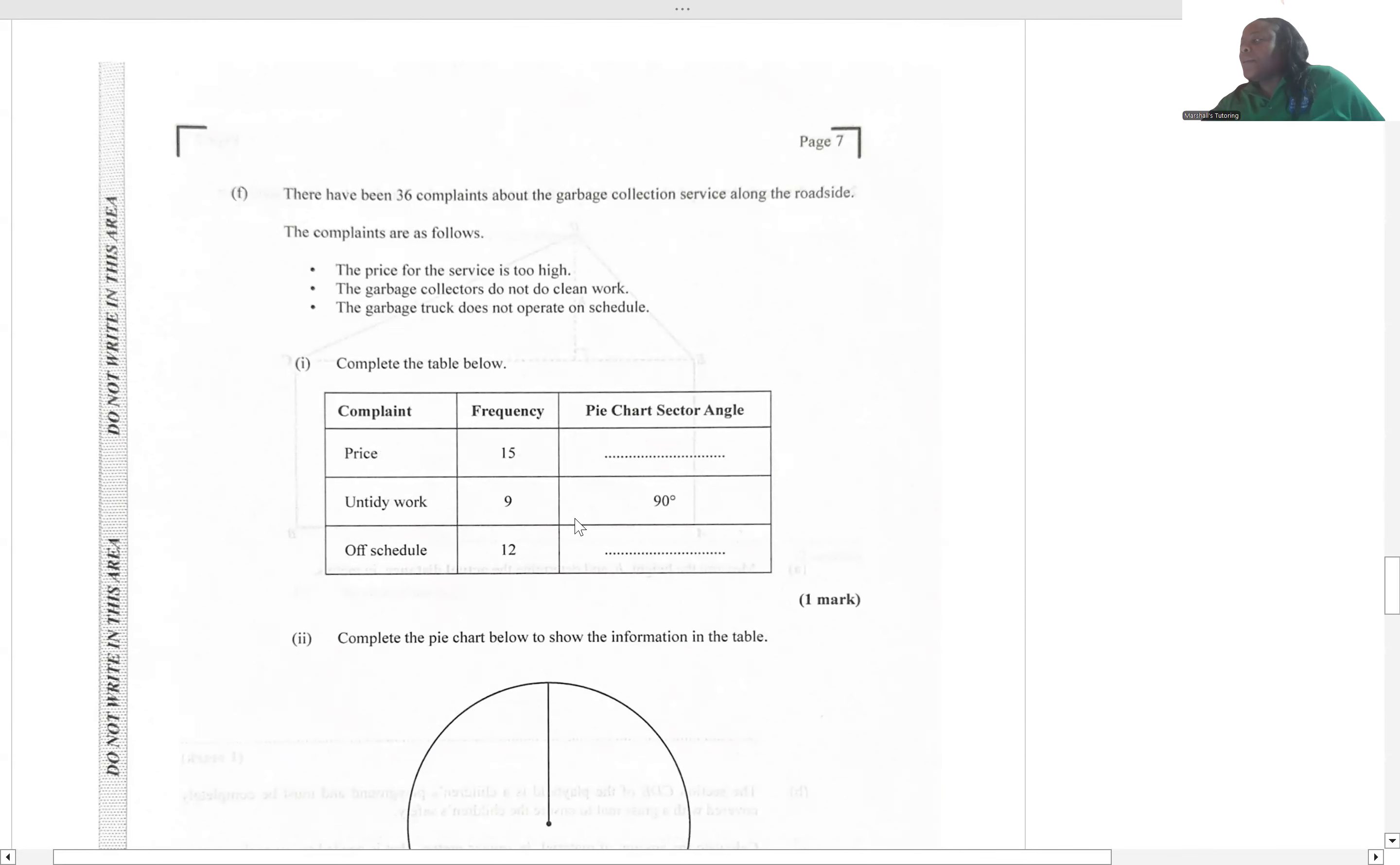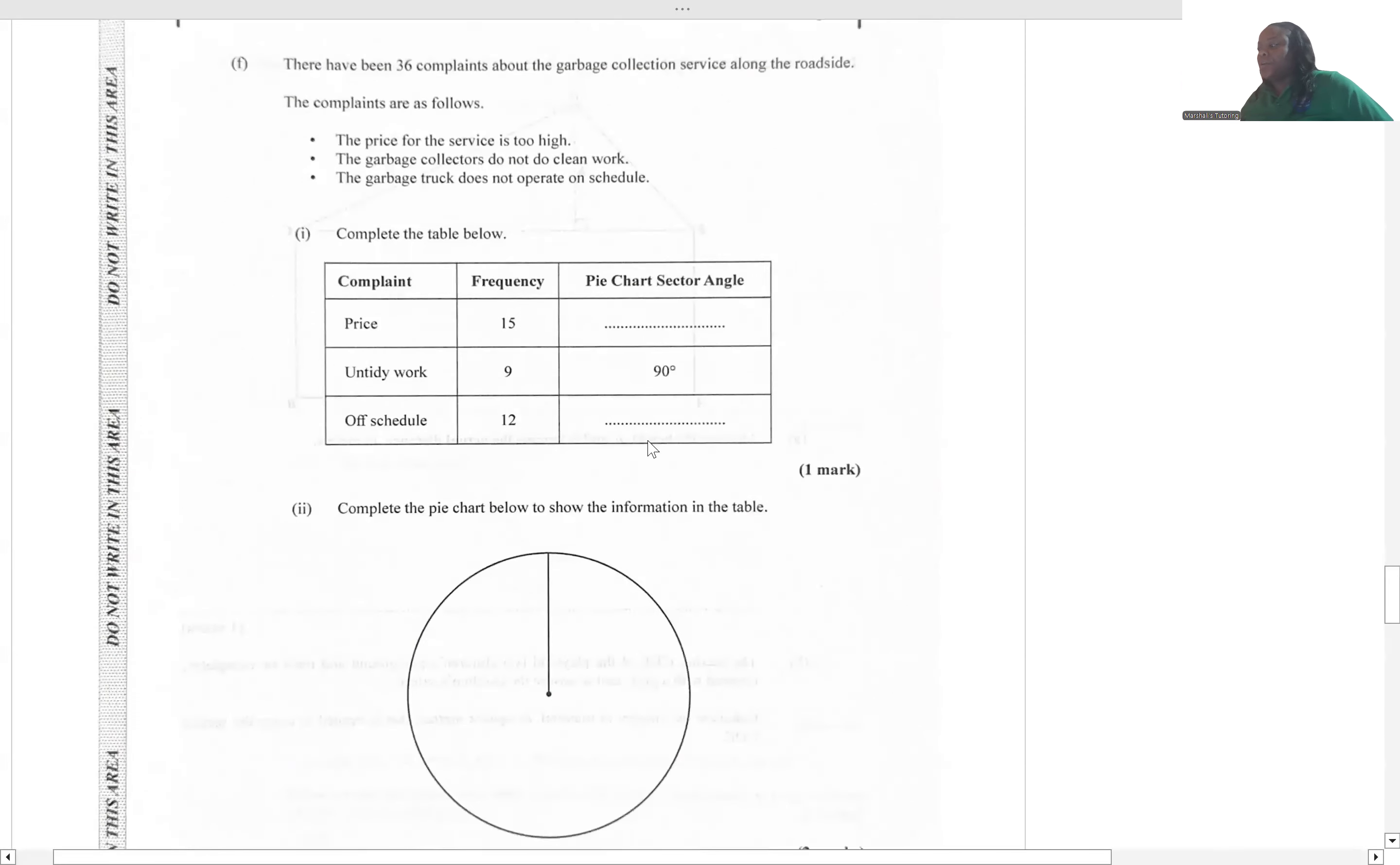There have been 36 complaints about the garbage collection service along the roadside. We have complete the table below with the frequencies and the pie chart sector angle. For pie charts, it's a circle. A circle is made up of 360 degrees. So what we have to do is find out what fraction of the population each one of these complaints represents, and then we're going to see what portion of the entire circle that it's going to represent, which will ultimately be the angle.